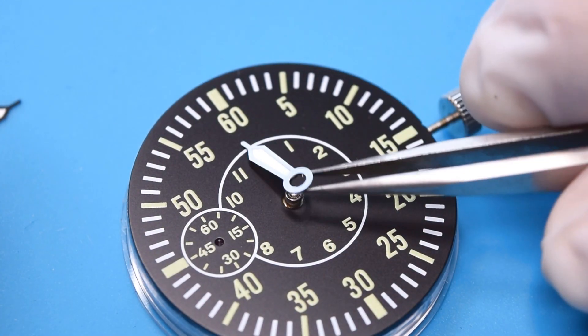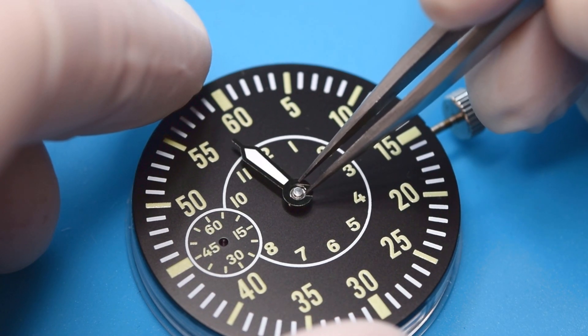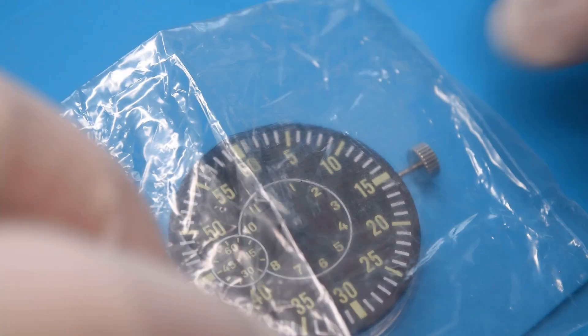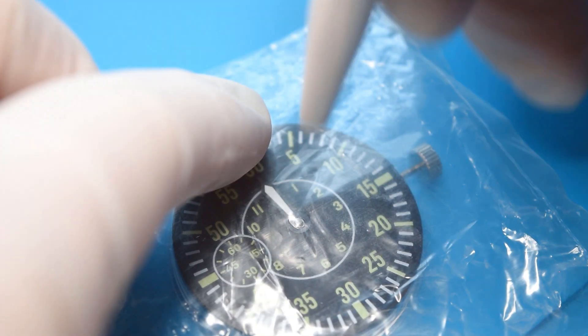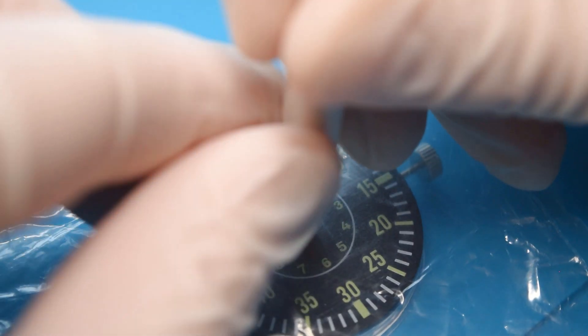And now I can install the watch hands and the first one will be the hour hand. I will use a foil. I'm using here a foil to avoid any scratches, but that's not really necessary.